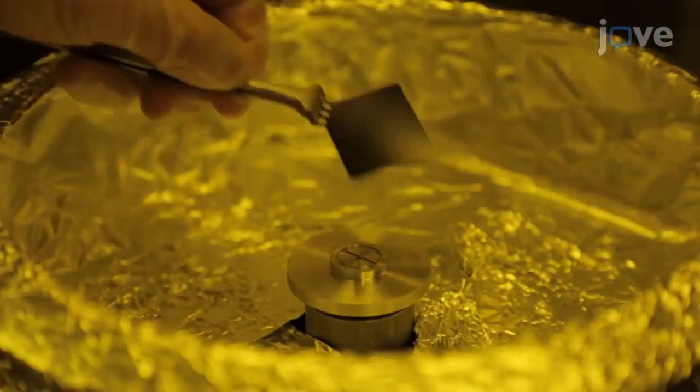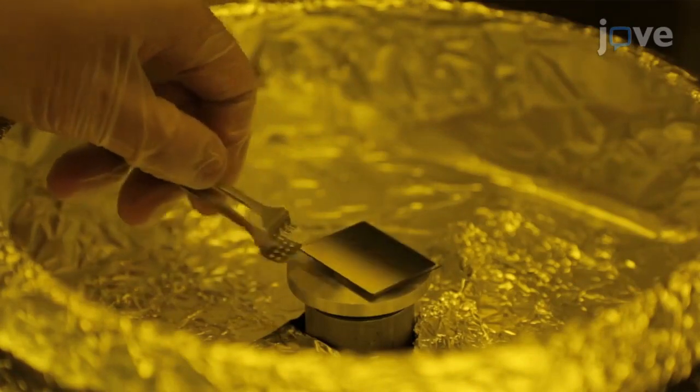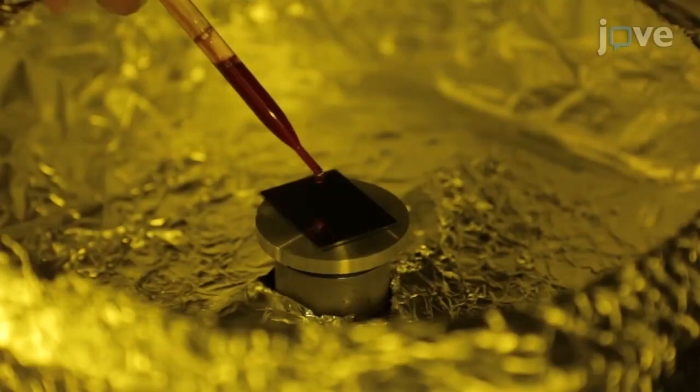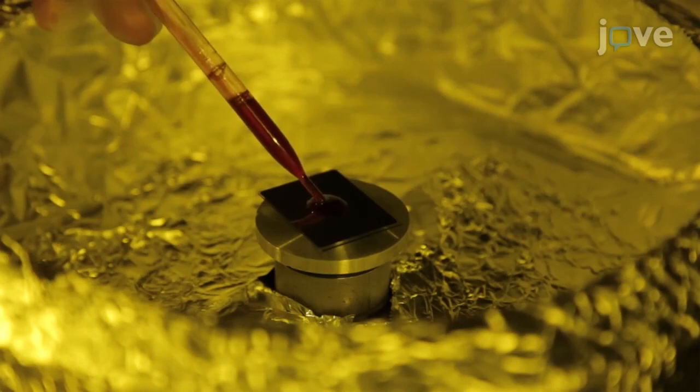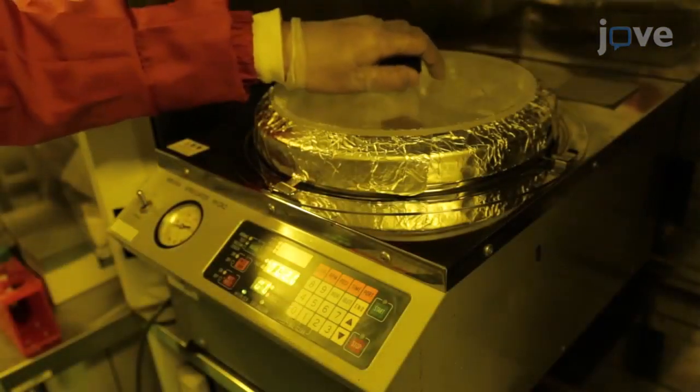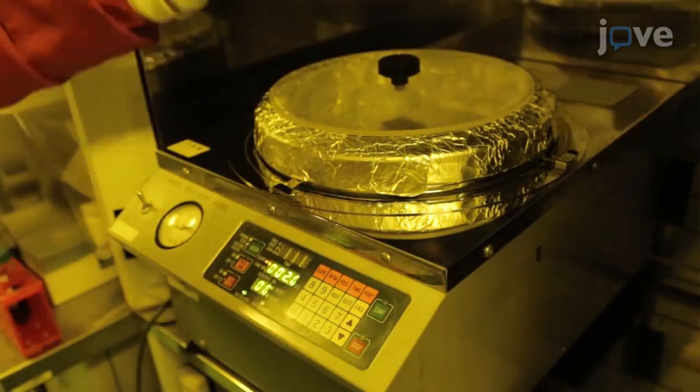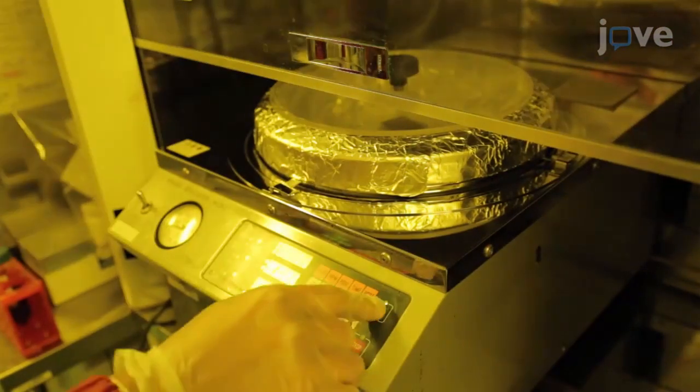Next, set the substrate on a fixing stage in a spin-coater chamber. Drop positive photoresist S1813 on the chromium film and coat the 1-2 micron thin film by spin-coating at 4000 RPM for 30 seconds.